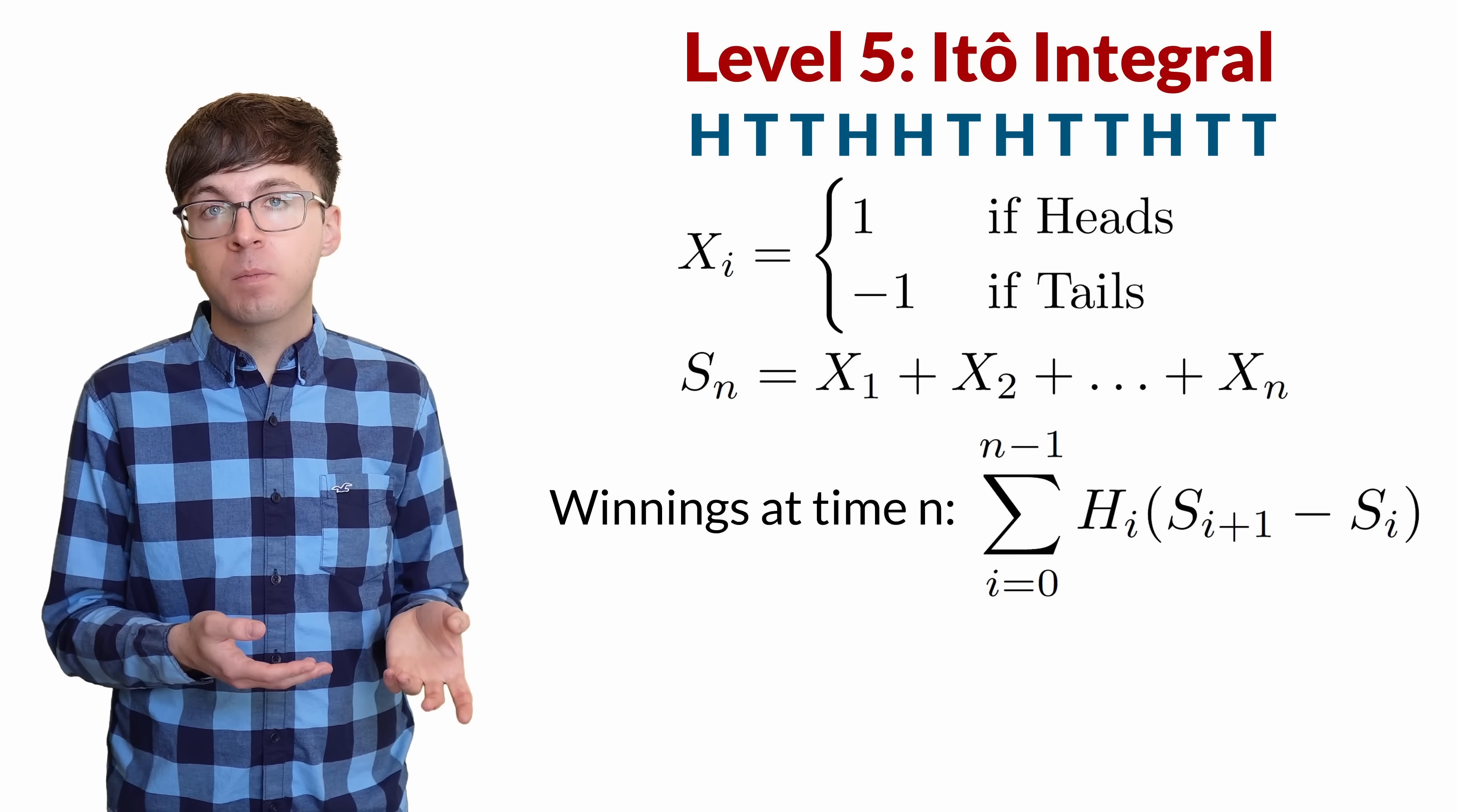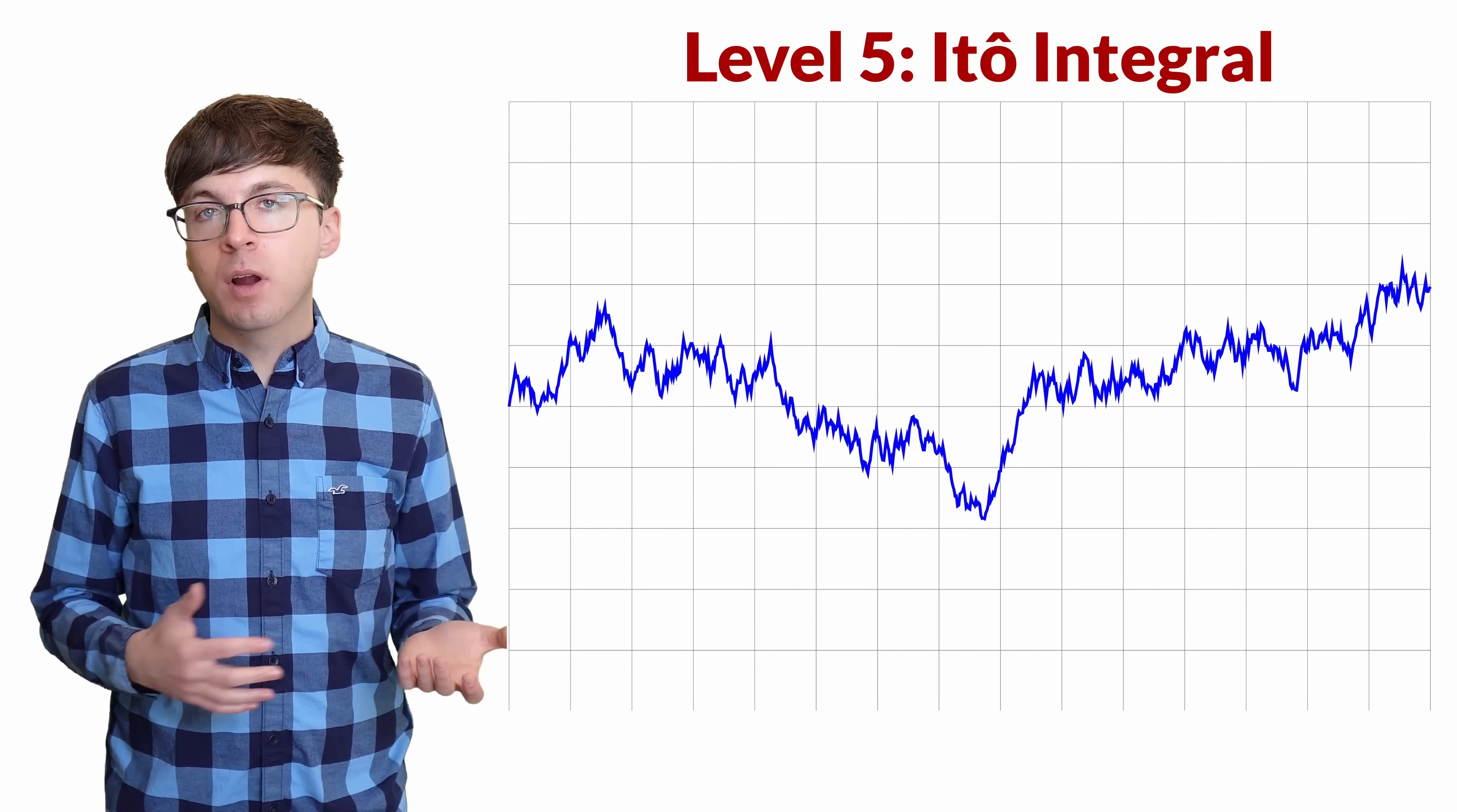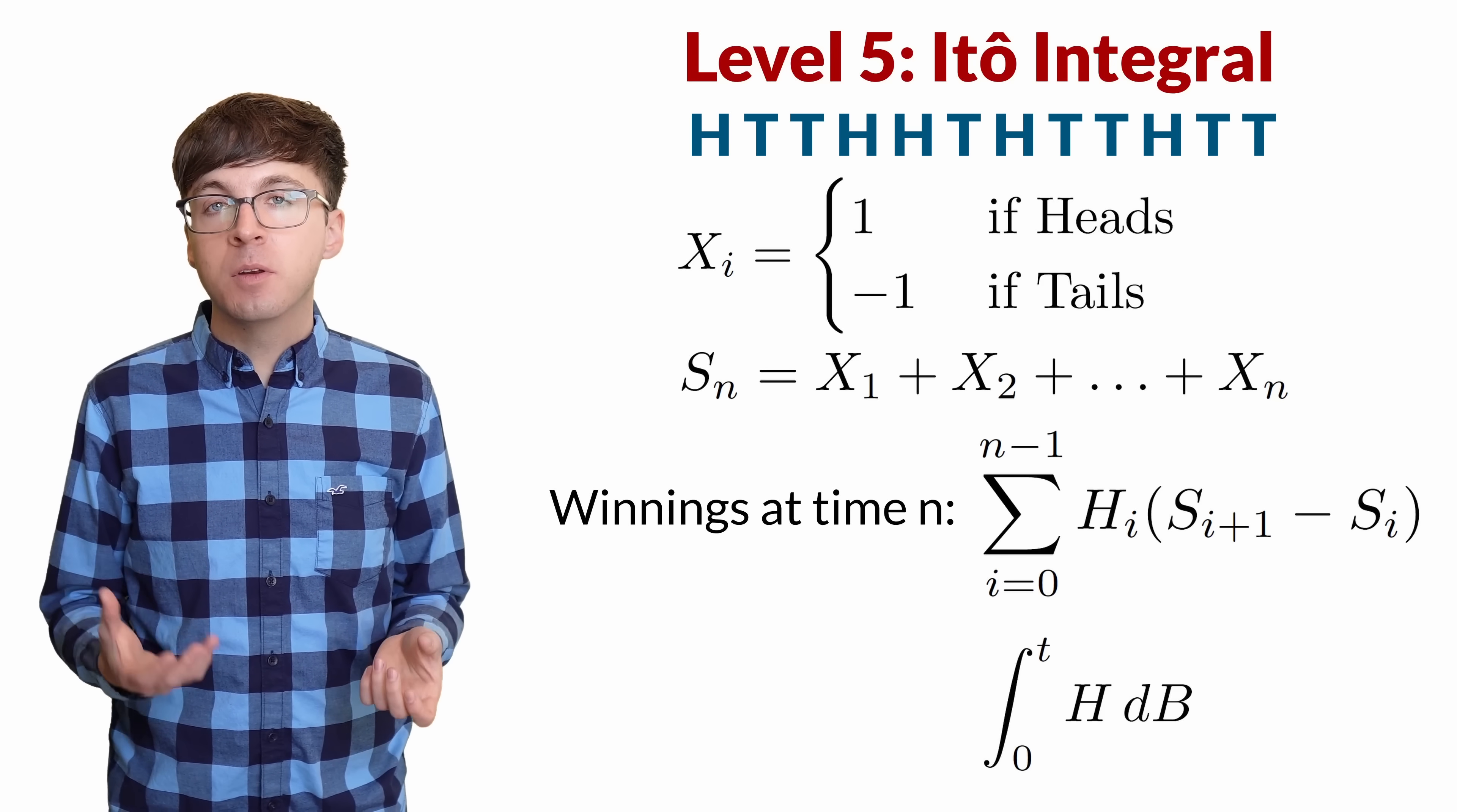For discrete time bets like this, we can just use the sum. But what if we want to analyze a continuous time process like stocks or bonds? We get the continuous analog of simple random walk, which is Brownian motion. Now instead of the sum, we have a stochastic integral. The integral of our function h with respect to Brownian motion B.